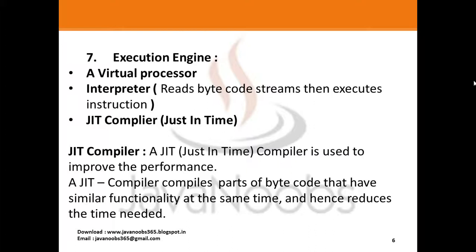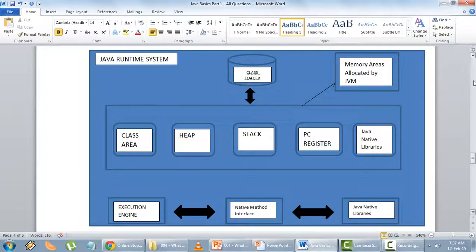A JIT compiler is used to improve the performance of the program — it runs a program much more efficiently and faster. A JIT compiler compiles parts of bytecode that have similar functionality at the same time, and hence reduces the time needed. Parts of bytecode having almost the same functionality will be compiled at the same time, so the time needed is reduced drastically.